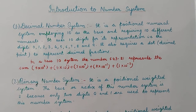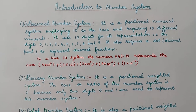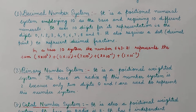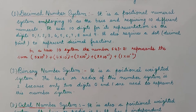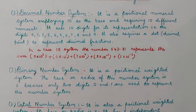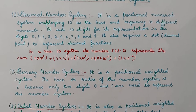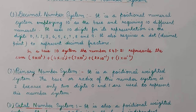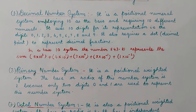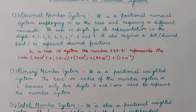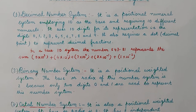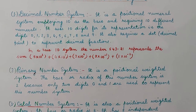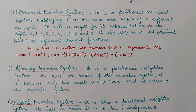The next number system is the binary number system. The word 'bi' means 2, so the binary number system is a number system which employs two digits for its representation. We can say that the binary number system has a base or radix of 2 because it uses only two digits, 0 and 1, for its representation. The next numbers are just the repetition of 0 and 1.